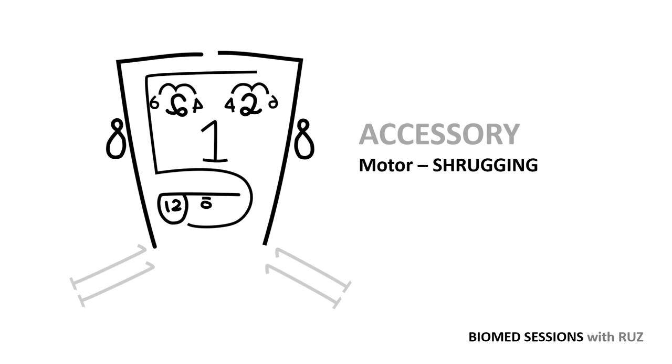You'll be relieved to know that our next nerve, cranial nerve 11, is much simpler in terms of function. The accessory nerve carries motor fibers which help you shrug your shoulders and turn or tilt your head.